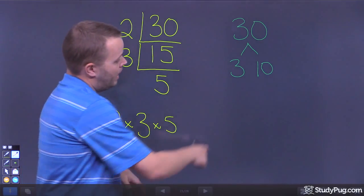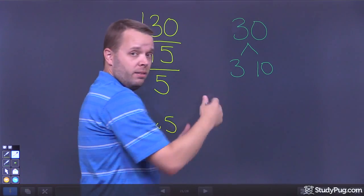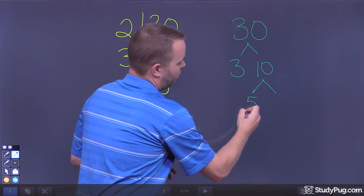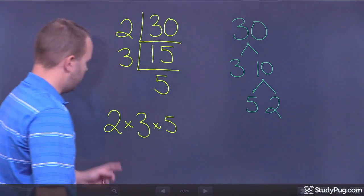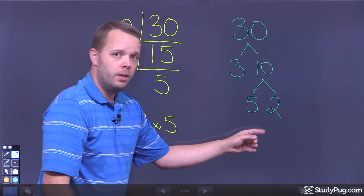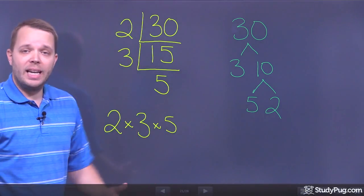3 times 10 is 30. And now, 3 is a dead end. That's a prime number. 10 can break down to 5 times 2. And you'll notice, 2, 3, 5. 2, 3, 5. So, either one of these methods is going to get you the prime factorization.